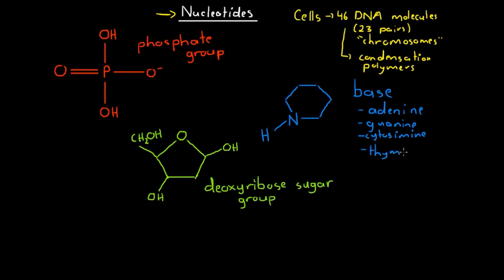These four different bases are in fact slightly different and have different functional groups added on to the carbons that form this ring. All these bases have this as their basic structure, but have different things coming off this ring of carbons with this nitrogen atom. So each nucleotide has this phosphate group, this deoxyribose sugar group, and this base.